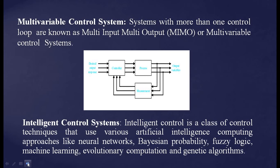Multi-variable control system: systems with more than one control loop are known as multi-input multi-output (MIMO) or multivariable control systems. Here we have more than one input to the controller and process, different outputs are measured and fed back to the controller — it is also a closed loop system. Intelligent control systems use various artificial intelligence computing approaches like neural networks, Bayesian probability, fuzzy logic, machine learning, evolutionary computation, and genetic algorithms.